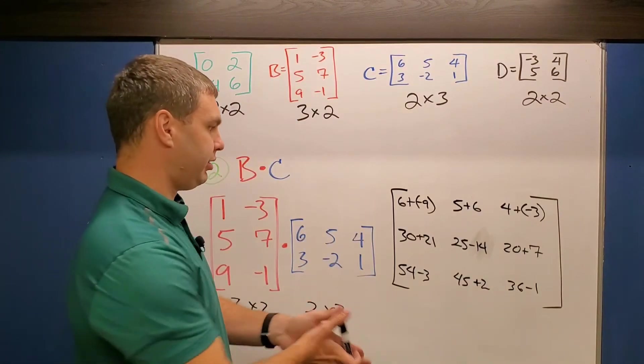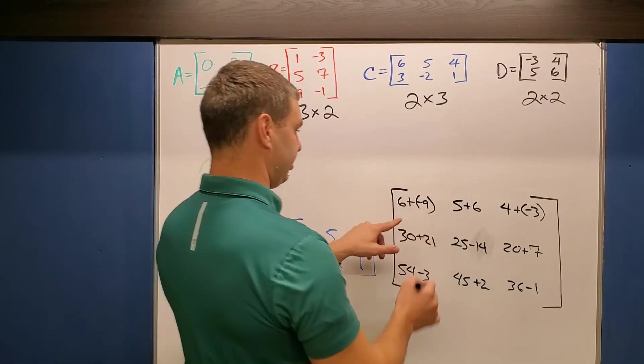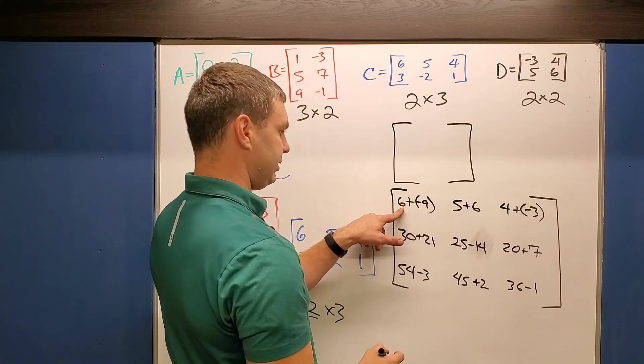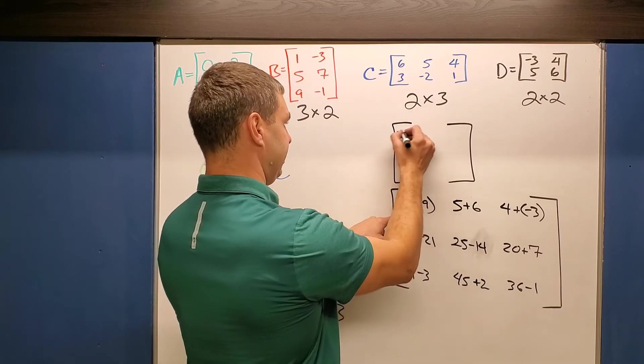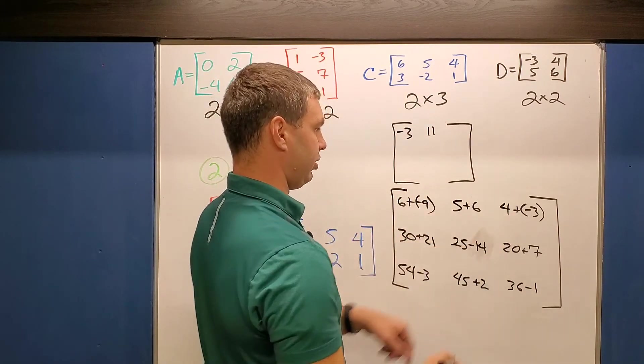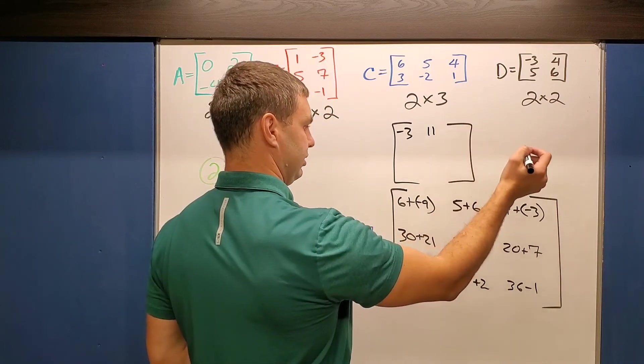So then we just have to simplify those together. And our answer is going to be a 3×3. Let's try it here. I'll make my 3×3 answer up here. 6 minus 9 is -3. 5 plus 6 is 11. 4 minus 3 is 1.